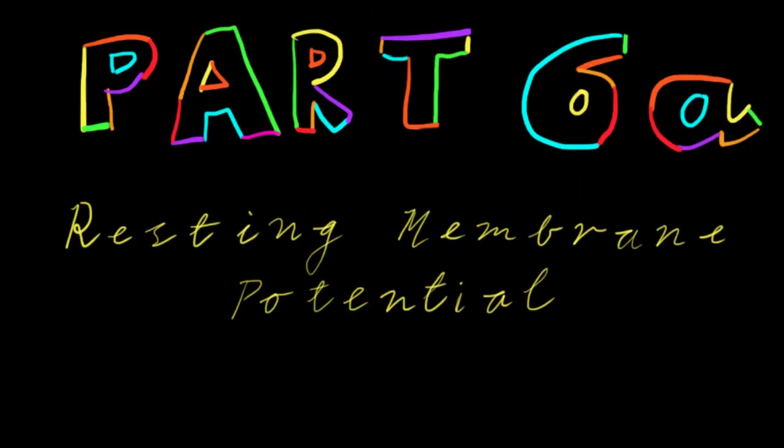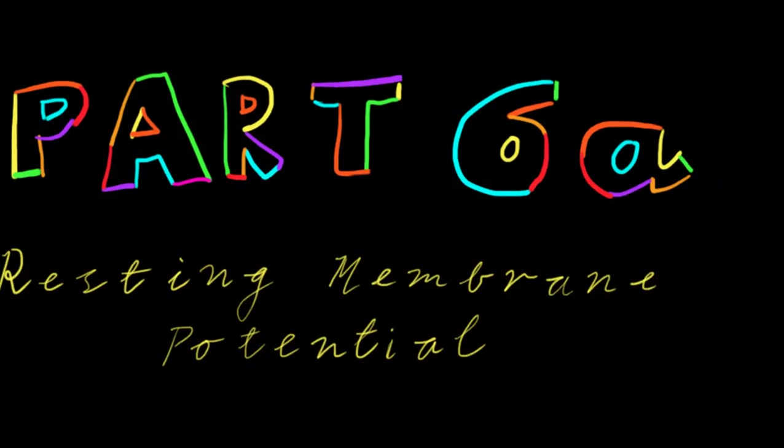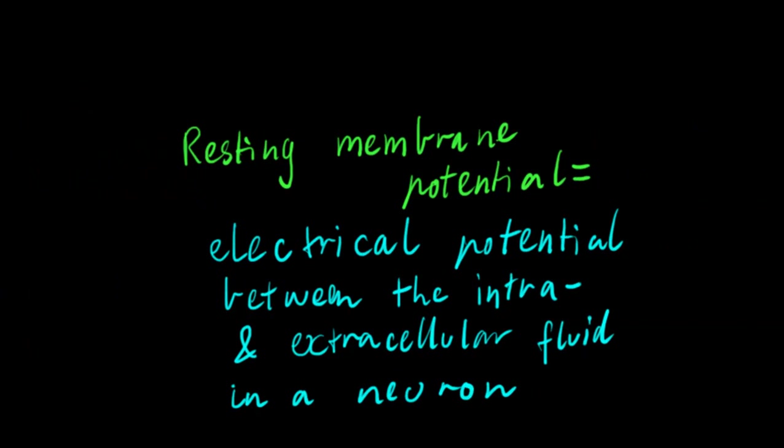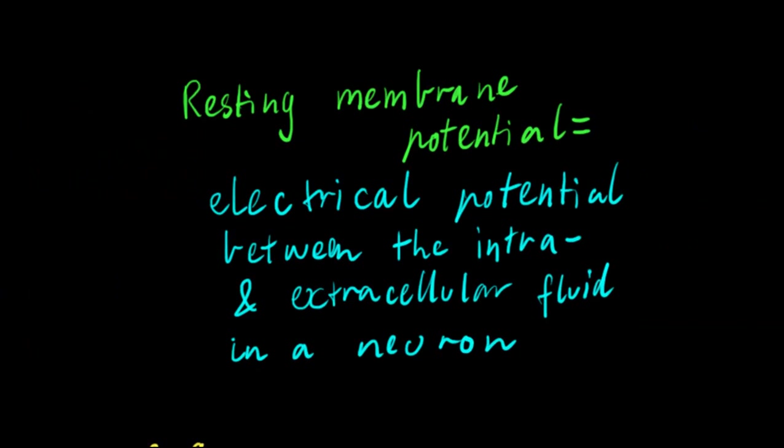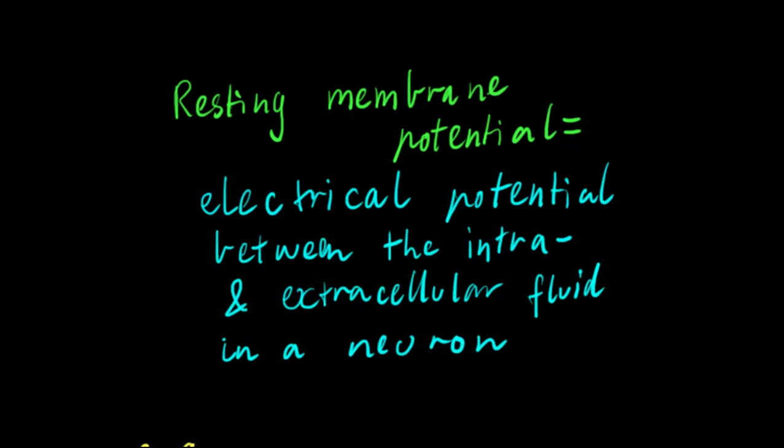So that's just the basics which I wanted to go over. However, I want to also just define here the resting membrane potential, which is, as far as we're concerned here, electrical potential between the intra- and extracellular fluid in a neuron. Or it could be in any other cell, but we're just going to look at the example of a neuron.